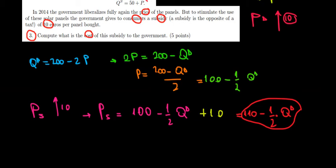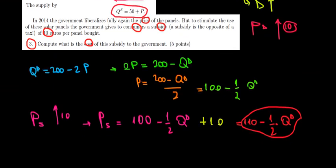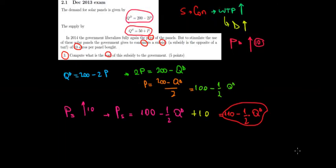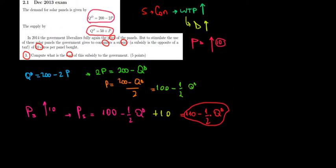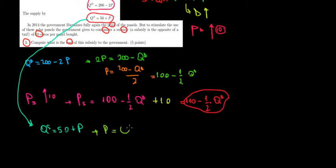With this new demand price function, we need to work it out together with the supply price so we can see what's happening at equilibrium. Let's derive the supply price. I'm going to zoom out to get more space. The quantity supplied equals 50 plus the price, so if we solve for price: P = quantity supplied minus 50. There we go — we have the price of the supply side.